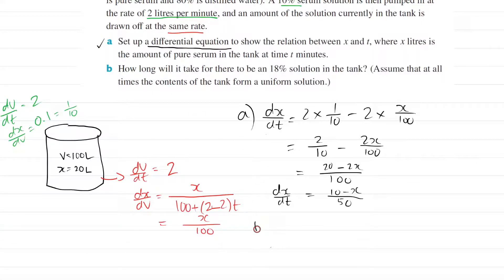Let's solve part B. What does part B say? How long will it take for there to be an 18% solution in the tank, assuming that all times the content of the tank forms a uniform solution. So how long will it take? We're solving for t. So what would t be when x equals 18?